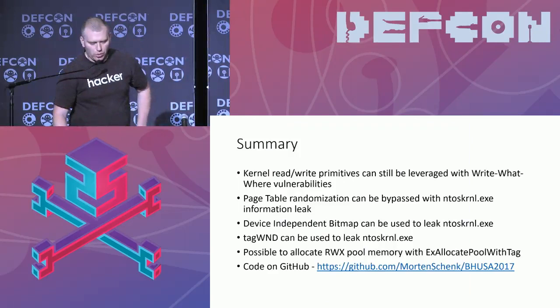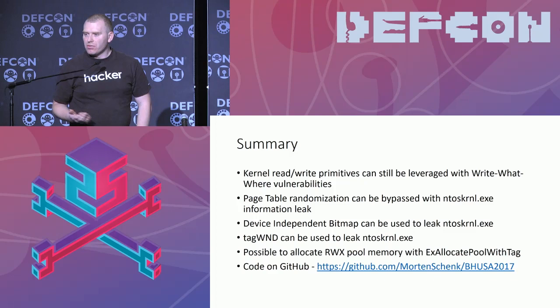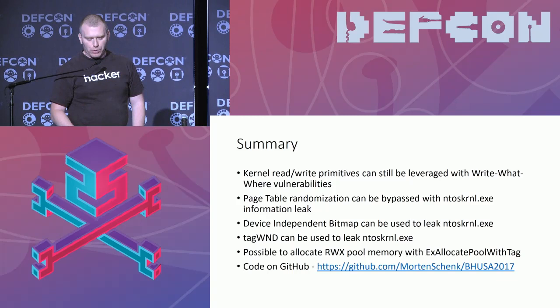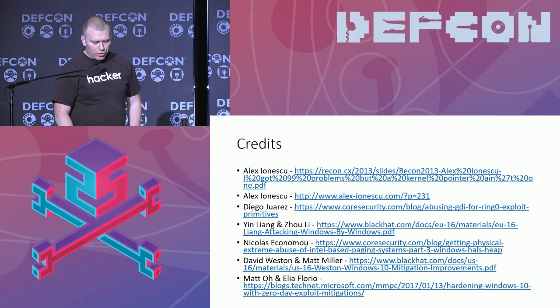So in summary, even though there have been a lot of mitigations in the current latest versions of Windows 10, none of the old techniques are really broken — we can revive them, we can bring them back. Read-write primitives work, page table entry overrides work. We can actually leak the NT kernel in new ways which didn't work before, but we could leak it. And we can also now allocate executable kernel pool memory. The code for this is already on GitHub, so you can get it there if you want to play with it. I didn't find out all of this — there was previous research which I want to credit people for. Thank you for listening.